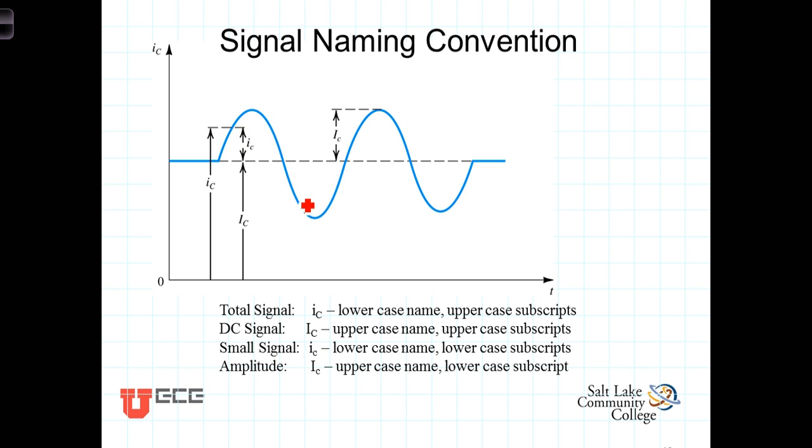There's also this time-varying signal in there that is named lowercase i with a subscript lowercase c. So the small signal, or the AC signal, will use both lowercases for the name and for the subscript.